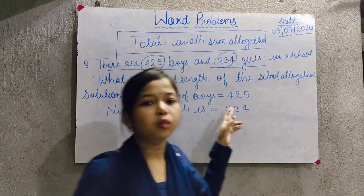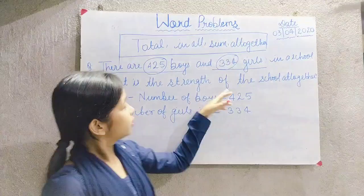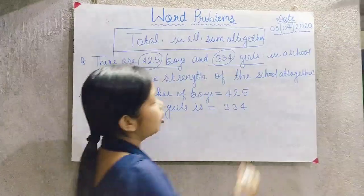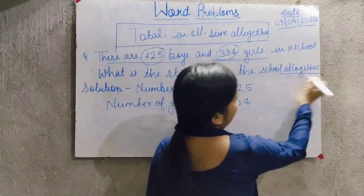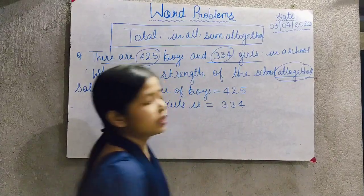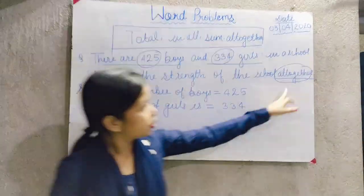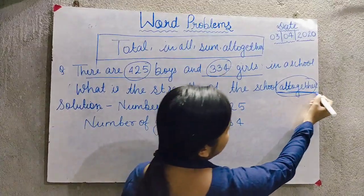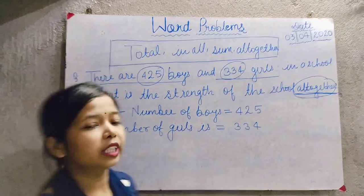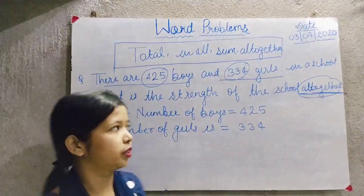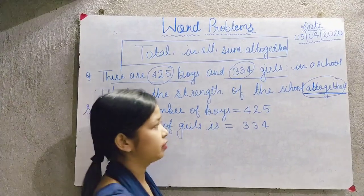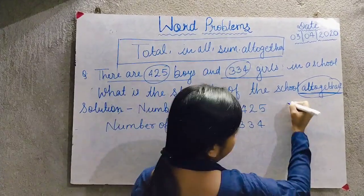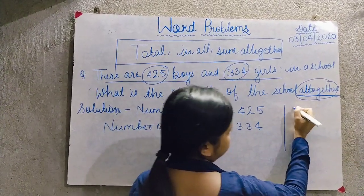In the second part of the question, it asks: what will be the total strength of the school all together? 'All together' is the keyword for addition — it tells us we need to perform addition. So what will we do? We will do addition.